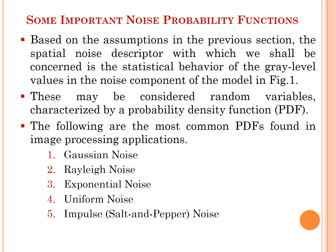Some important noise probability functions. Based on the assumptions in the previous section, the spatial noise descriptor with which we shall be concerned is the statistical behavior of the gray level values in the noise component of the model in Figure 1. These may be considered random variables characterized by a probability density function, i.e., PDF. The following are the most common PDFs found in image processing applications: Number 1, Gaussian noise; next, Rayleigh noise; exponential noise; uniform noise; impulse salt and pepper noise.